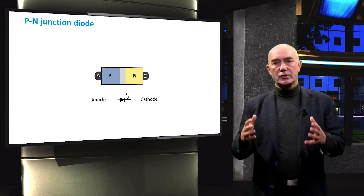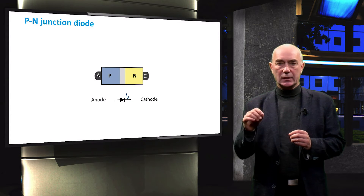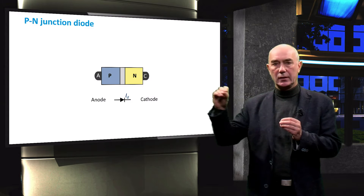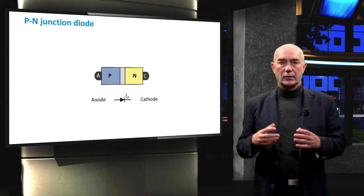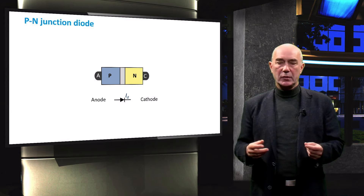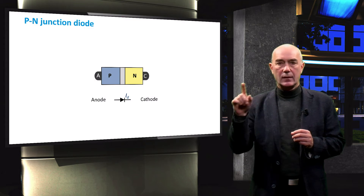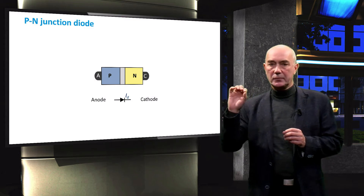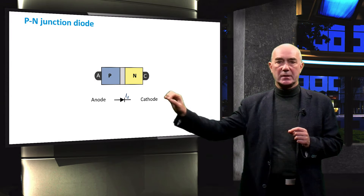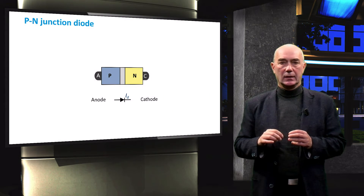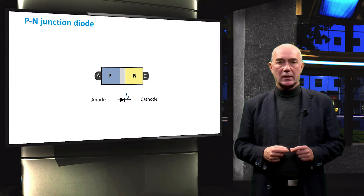The definition says that a cathode is the electrode from which the current leaves an electrical device. The circuit symbol of a PN junction diode has the triangle pointing from the P-type semiconductor to the N-type semiconductor. ID represents the diode current.